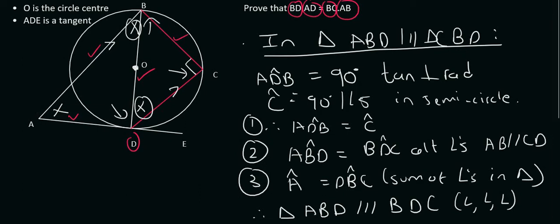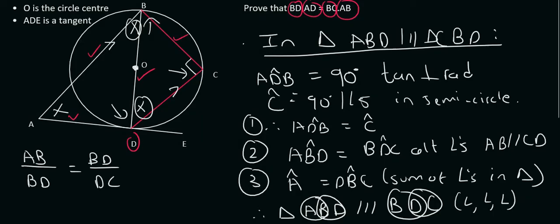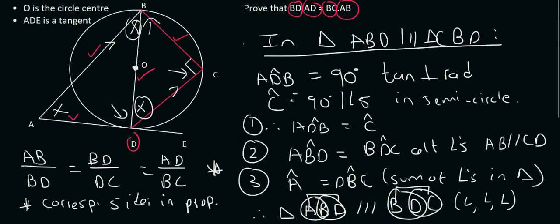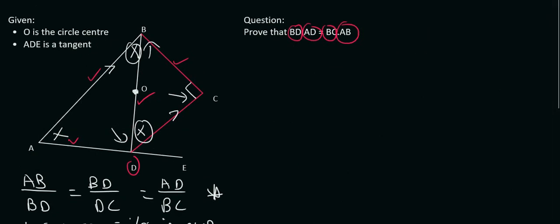Now remember, after you say that, you can then use your ratios. You can say that AB over BD is going to be the same as BD over DC. And that's going to be the same as AD over BC. And the reason for that one, I would have added it here in a test, but I don't have space. So I'm going to say corrisp, which represents corresponding sides in proportion or in prop.